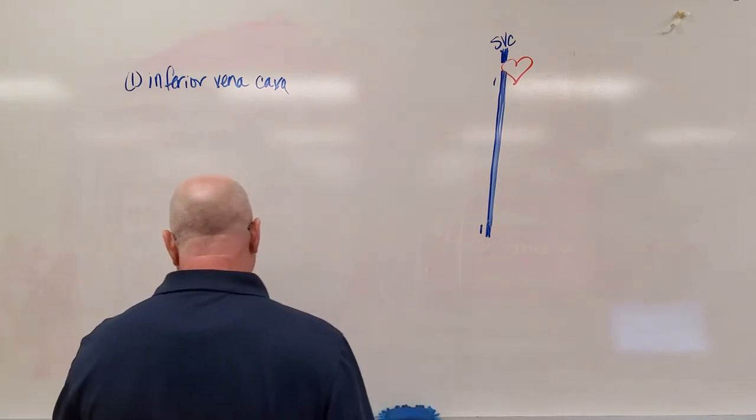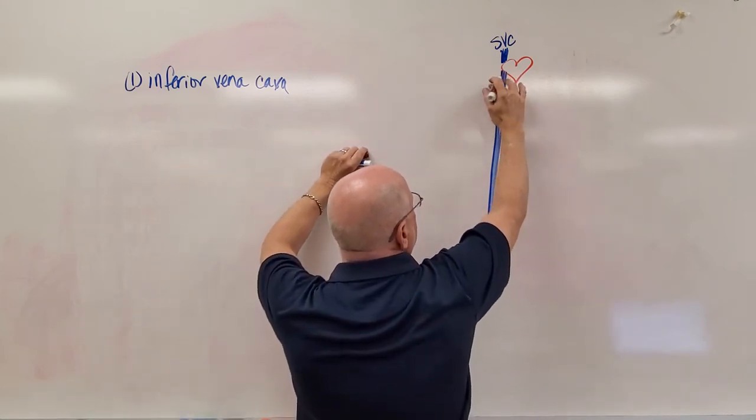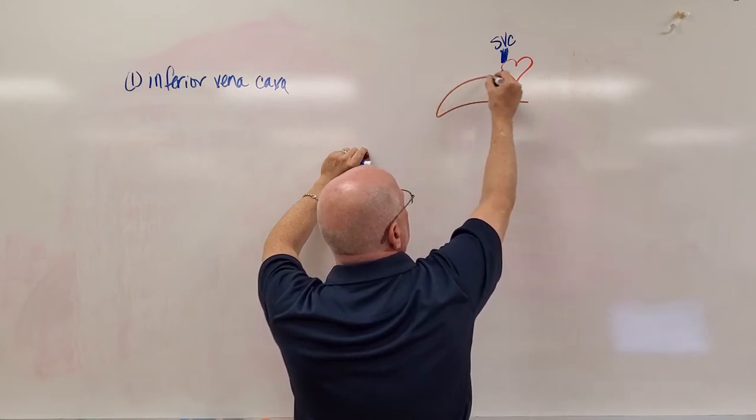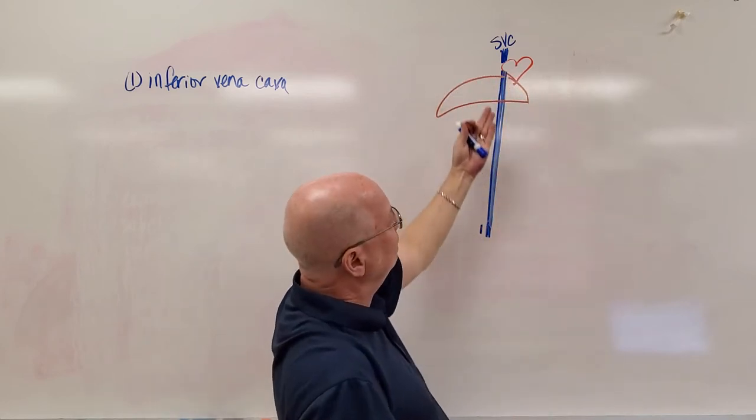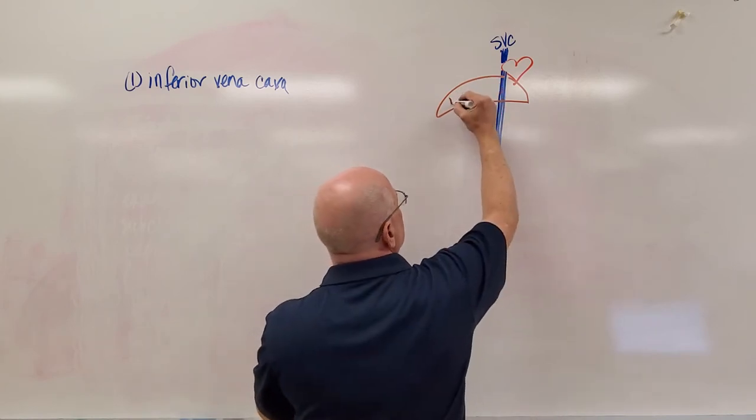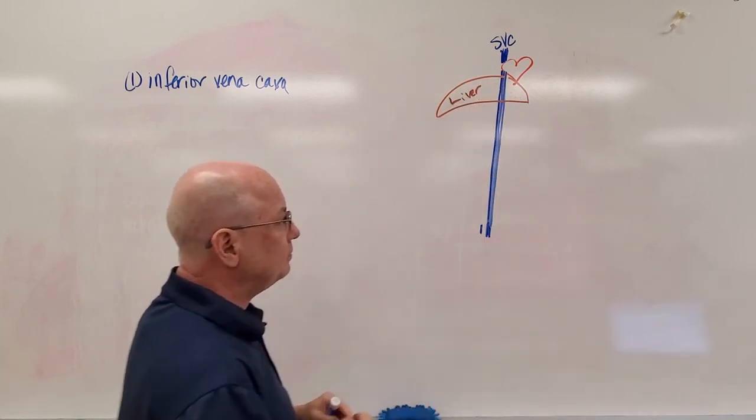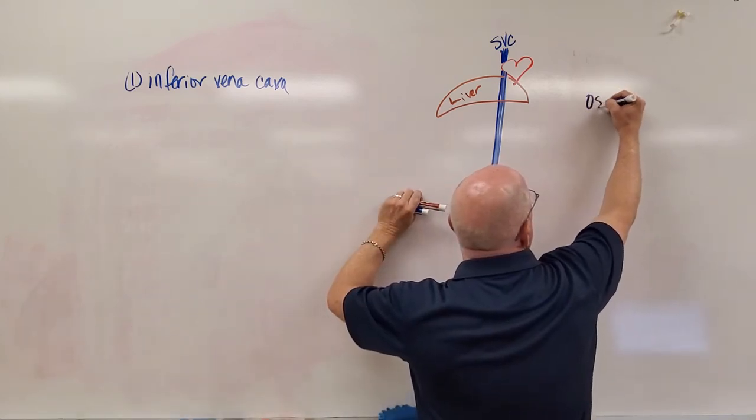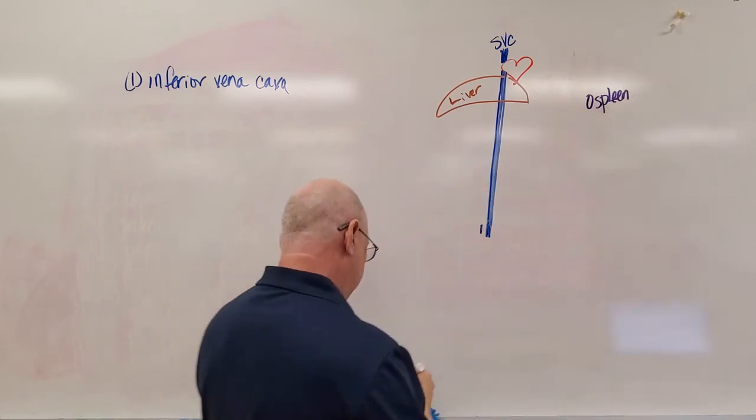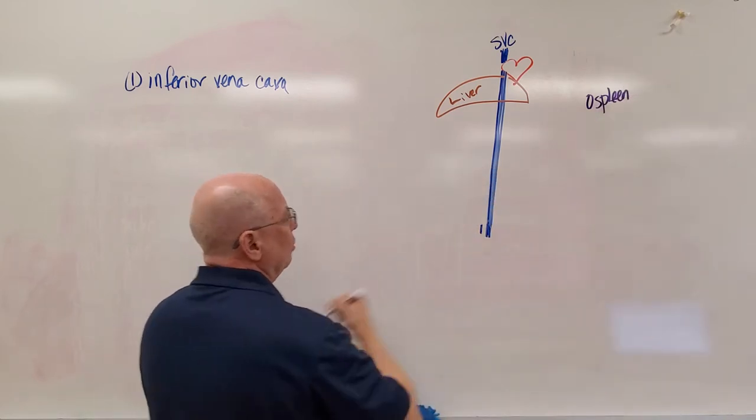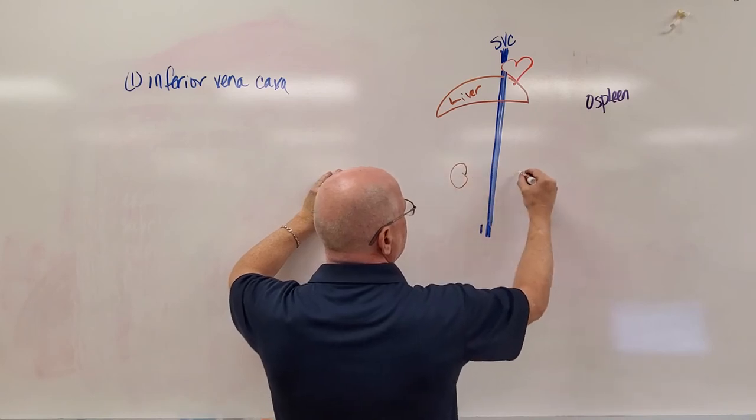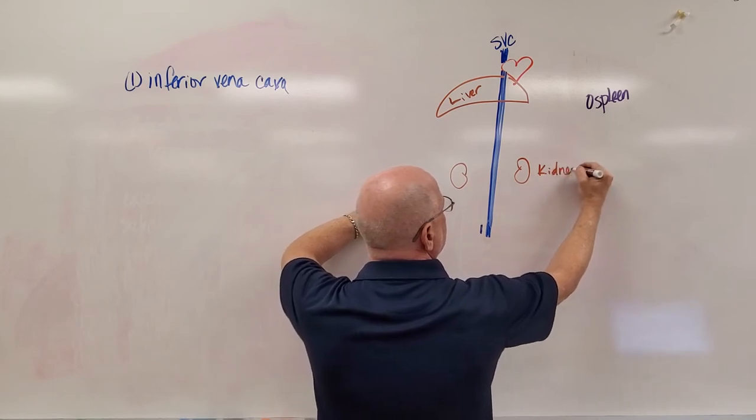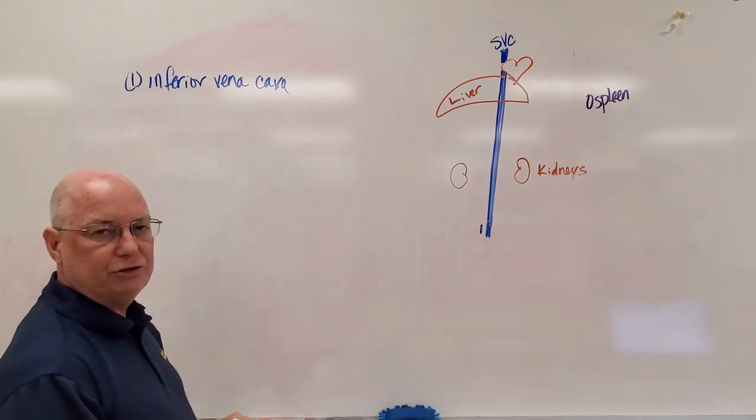So number one on our picture is going to be the inferior vena cava. Now, a couple of major organs that are sitting here, one of the organs that sits here is the liver, which wraps around the inferior vena cava. It would be running on the backside of the liver. Another major organ that we're going to see over here is the spleen. And then finally, we would have two kidneys or renal organs. Those are some of our major landmarks.